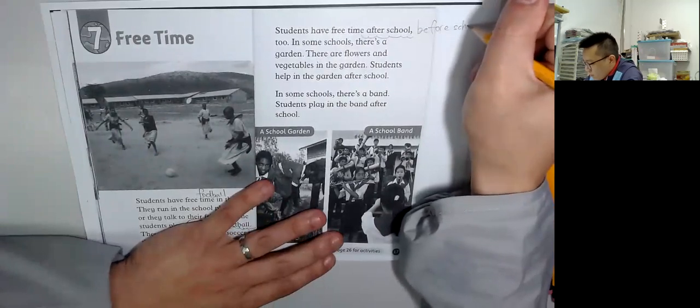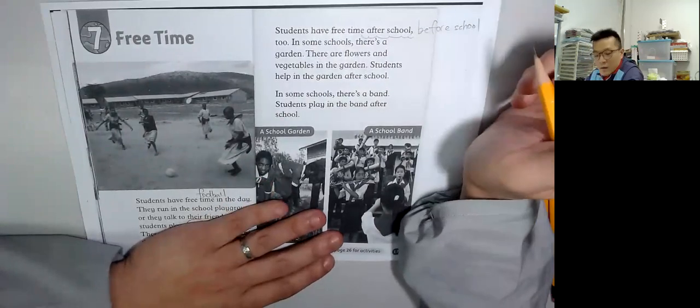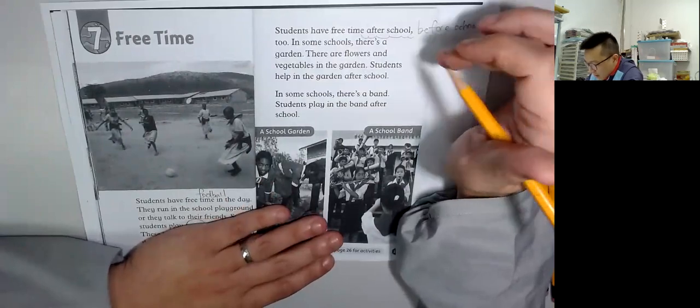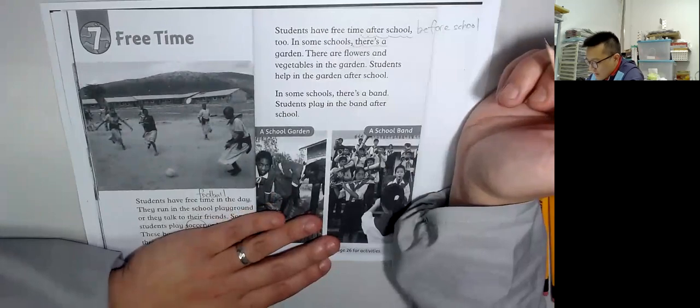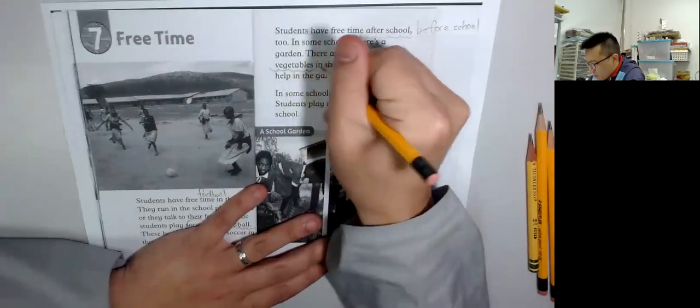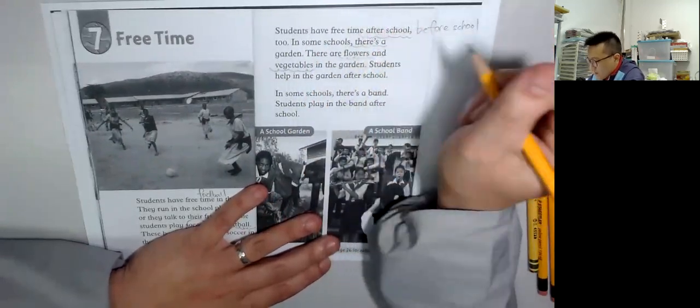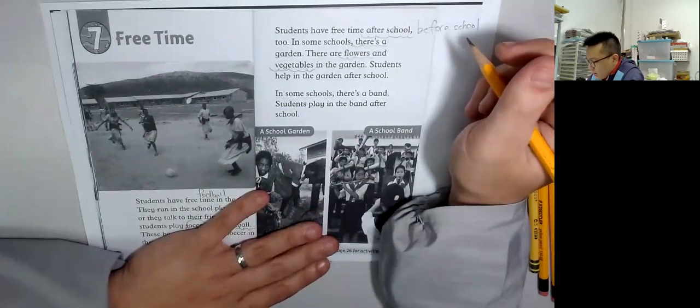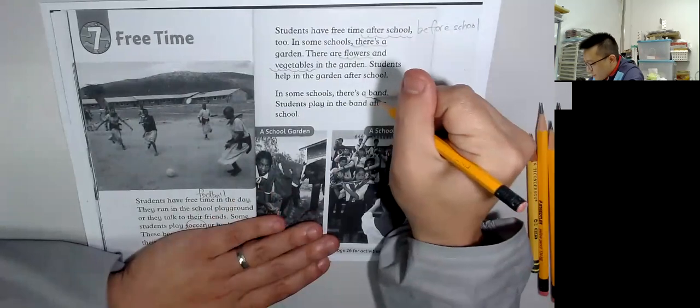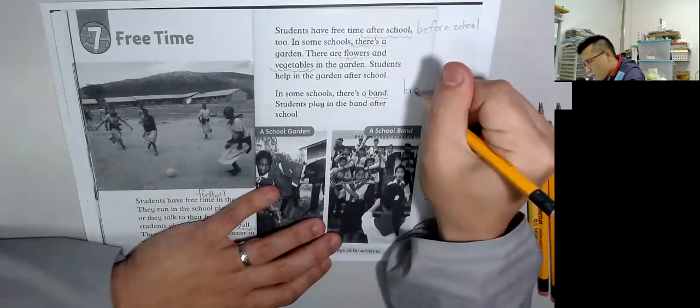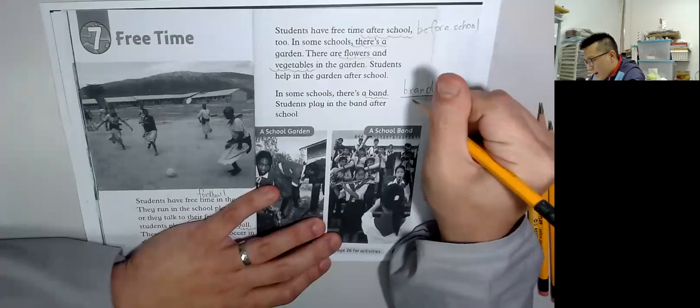Before school, in some schools there's a garden. There's a garden, there are flowers and vegetables. Students help in the garden after school. In some schools there's a band. Band, but no, the error is brand.